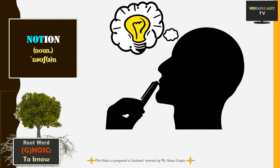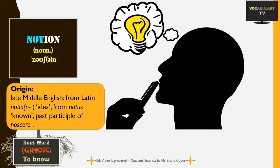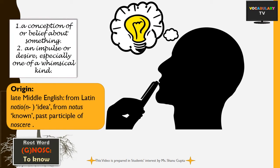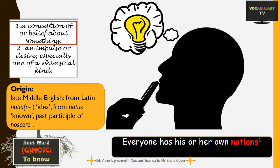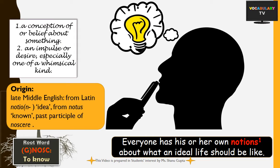The very first of these words is 'notion', derived from 'notio', which is the past participle of the Latin verb Nucer. The word literally means an idea or something that you think you know. In today's English, notion means a conception or belief about something. For instance, everyone has his or her own notions about what an ideal life should be like.